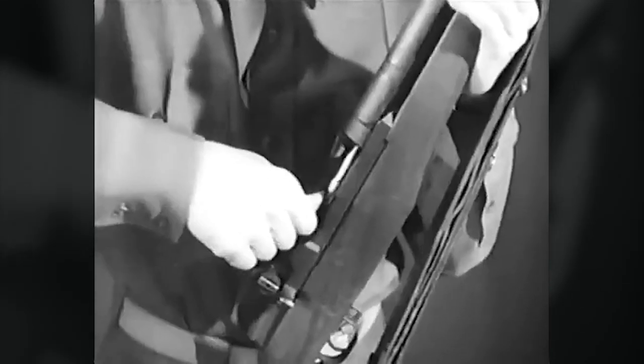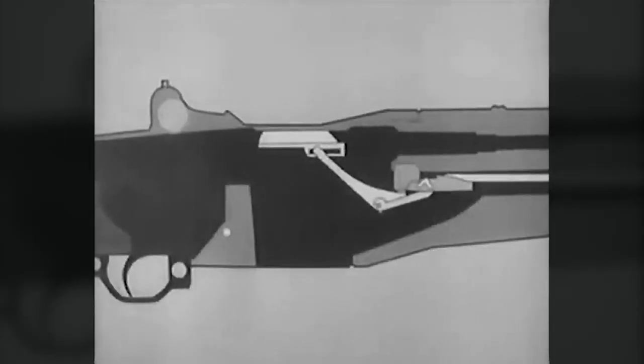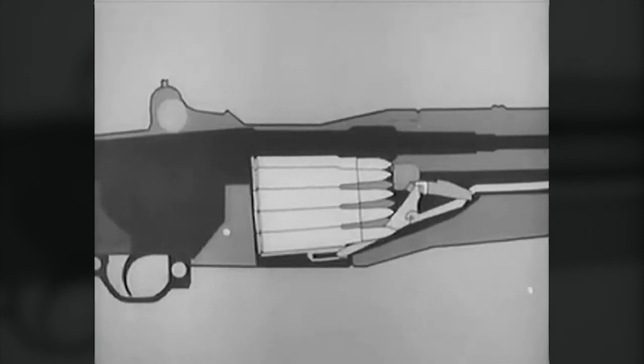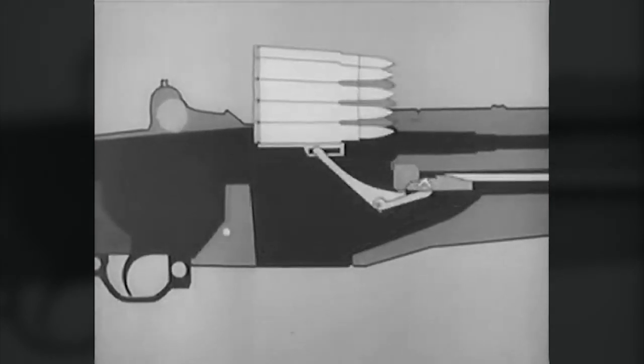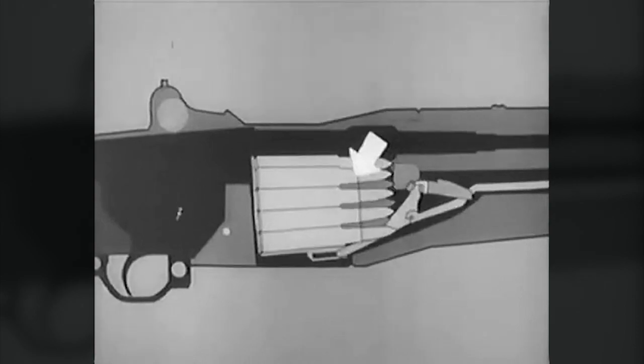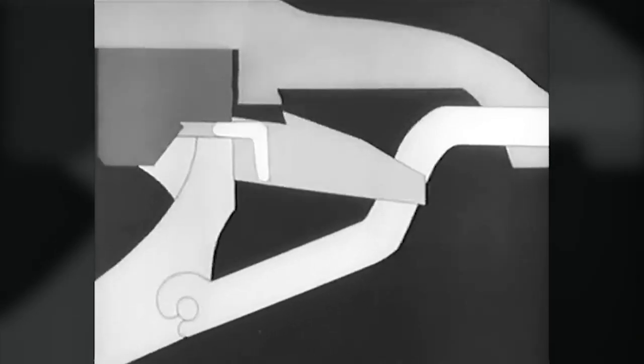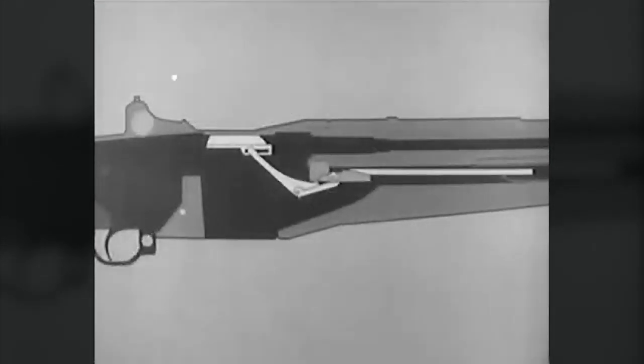So let's begin by loading a fresh clip and using an animated diagram. This shows what happens when the clip is inserted. The bottom cartridge forces the follower down. We'll now add the operating rod, spring and bolt to the diagram.